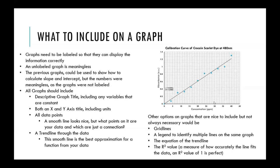If you have multiple lines on the same graph, include a legend to indicate which line is which. For linear graphs, it may be useful to include the equation of the line as well as the R-squared value, especially in upper-level courses like physical chemistry, analytical chemistry, or engineering. The R-squared value is a measurement of how precisely the line equation fits your data set.